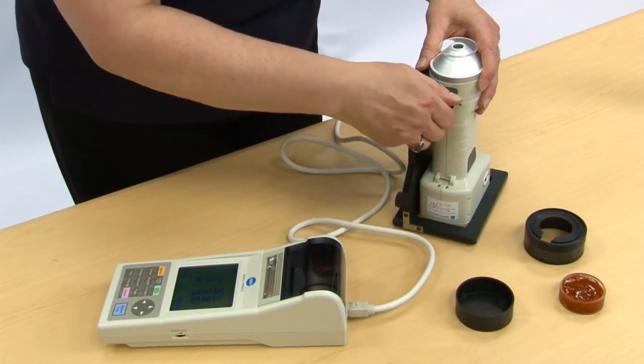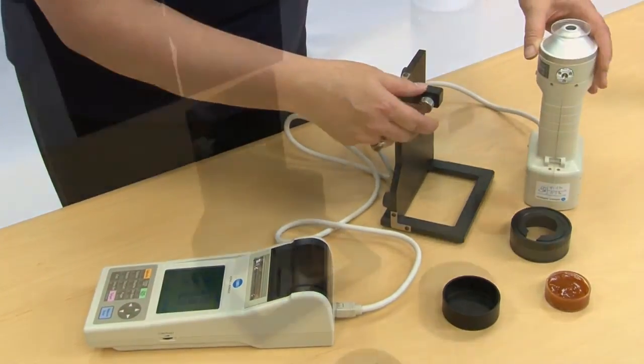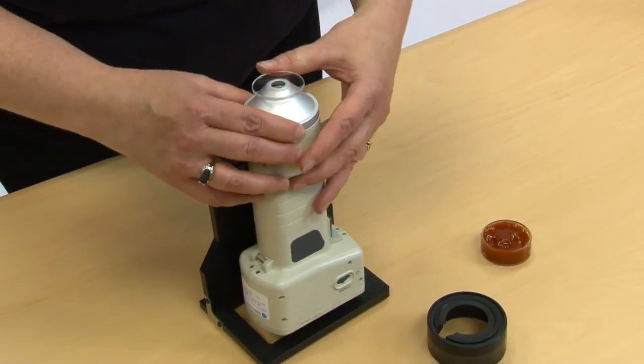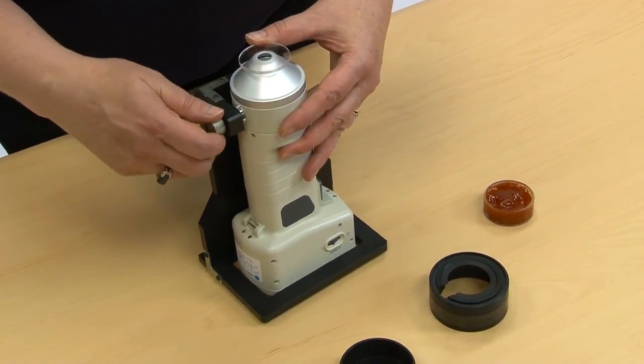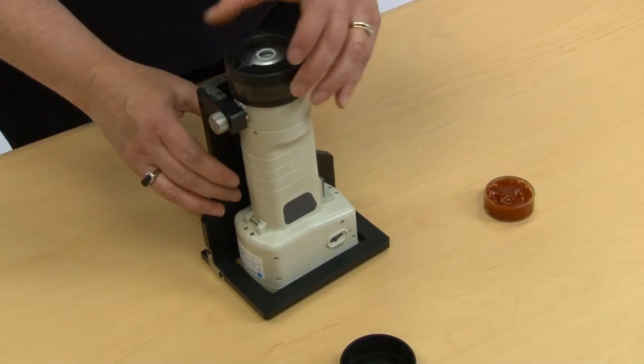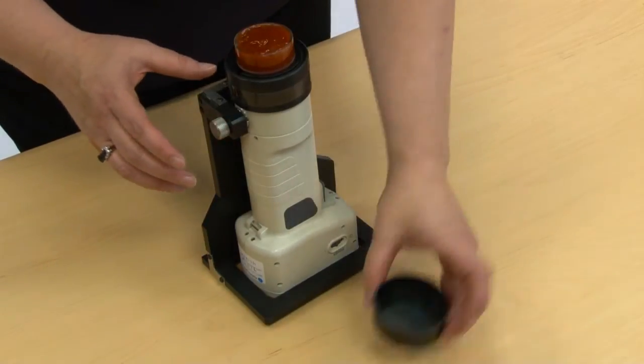The accessory can be used with a data processor attached to the CR400 head, in standalone mode, or connected to SpectraMagic NX. A standard 45mm petri dish is sold separately through Konica Minolta. This is also compatible with the CR400 410 stand, as shown here.